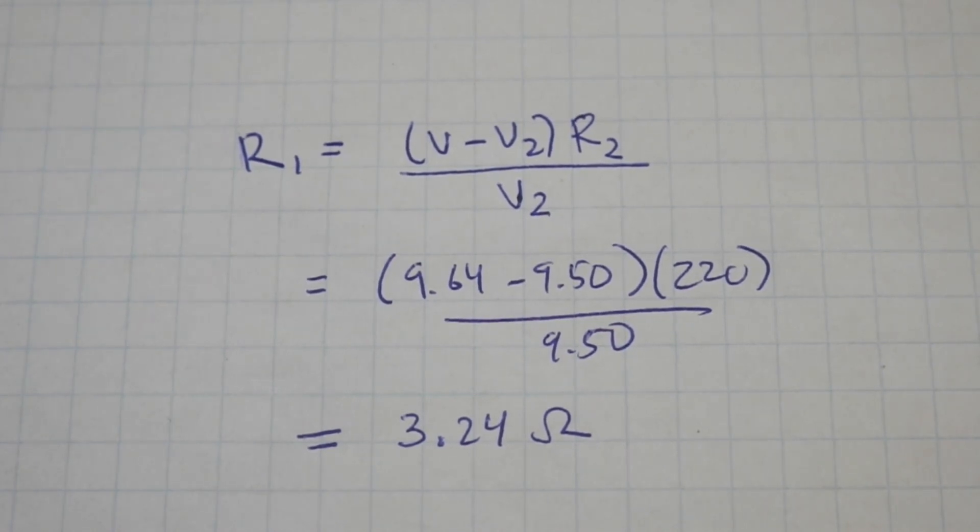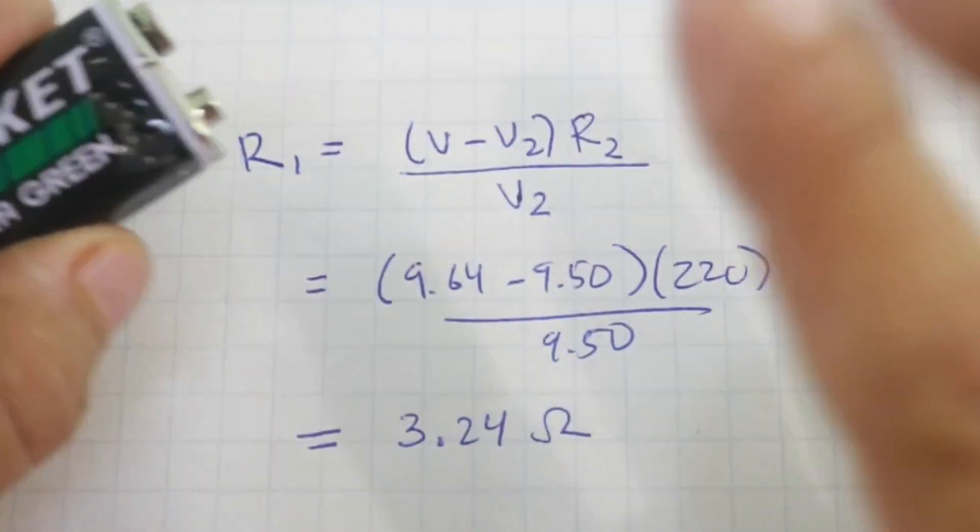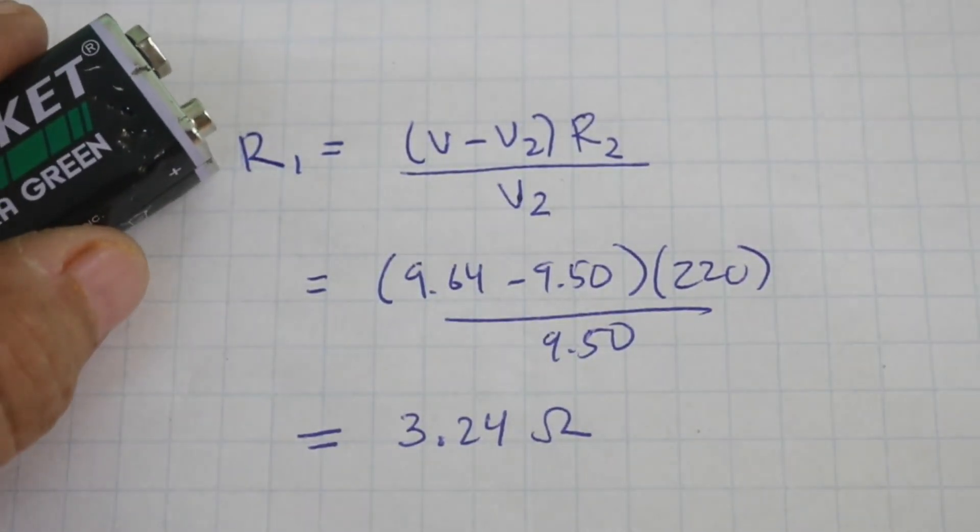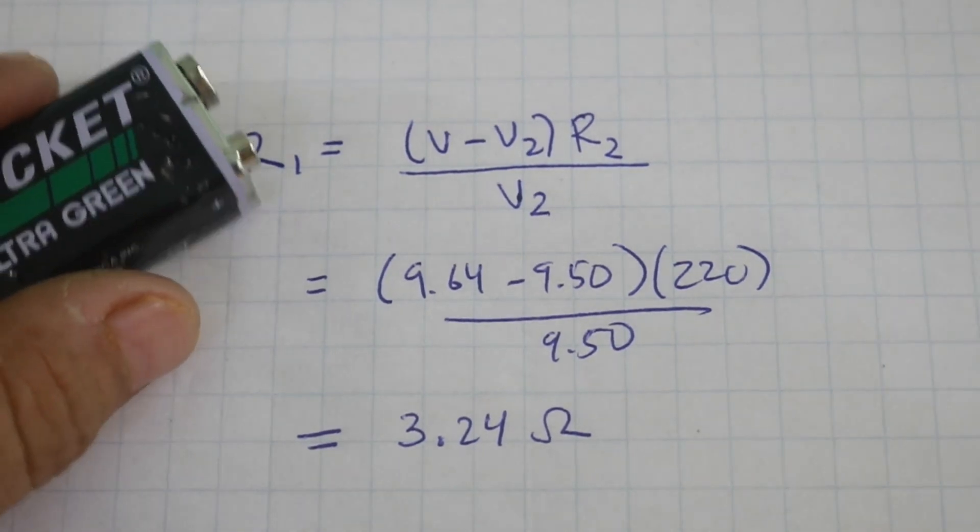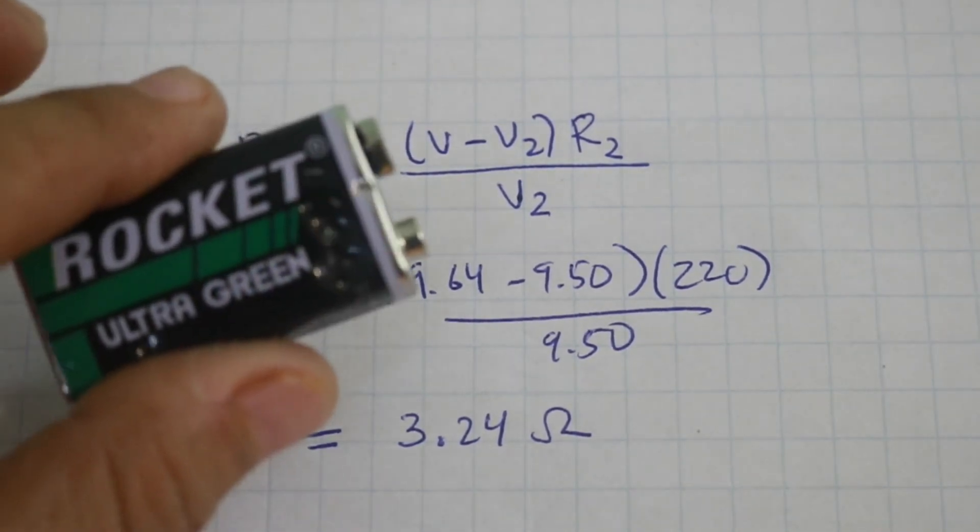It is important to note that the internal resistance of a battery is not only dependent on the chemistry of the battery, but also is a function of how old your battery is. A new battery has less internal resistance, and this resistance starts to increase as the battery gets old.